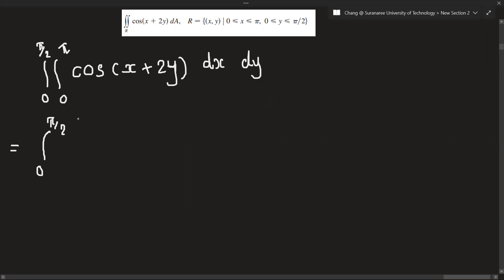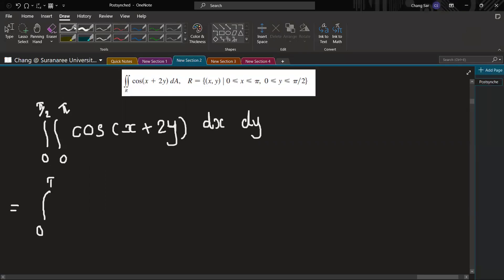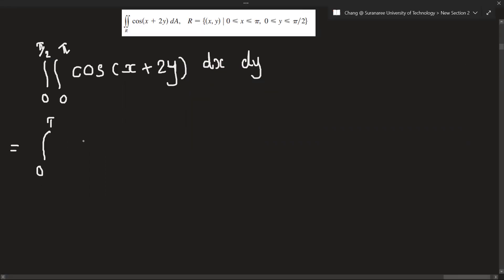When we integrate cos, we will get minus sin. Oh sorry, we will get just sin, not minus. Okay, so here we will get, wait. Okay, so we will get sin x plus 2y.